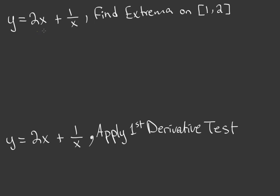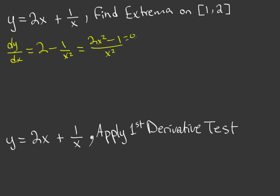To find the extrema on this interval, we need to find our critical points by taking the first derivative. So dy/dx equals 2 minus 1 over x squared, which simplifies to (2x² − 1) over x² by finding a common denominator. We only set the numerator equal to zero — not the denominator — because the denominator gives us an asymptote.